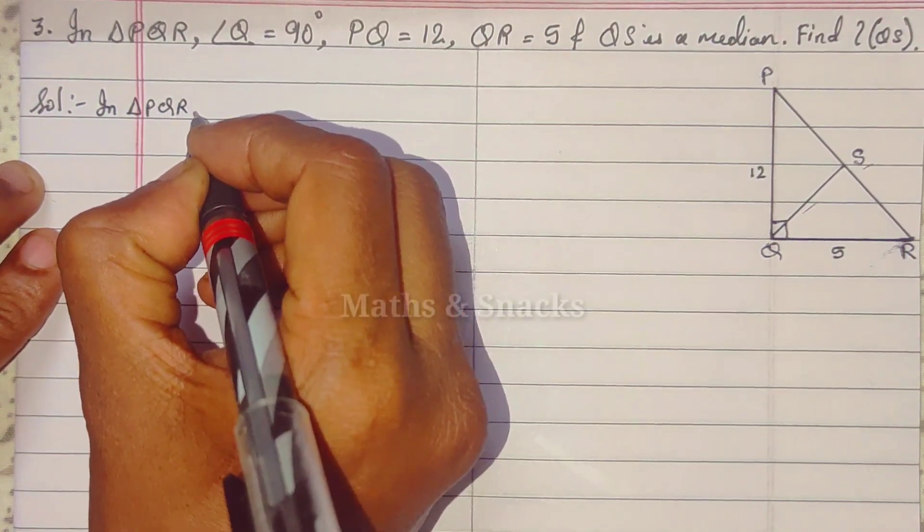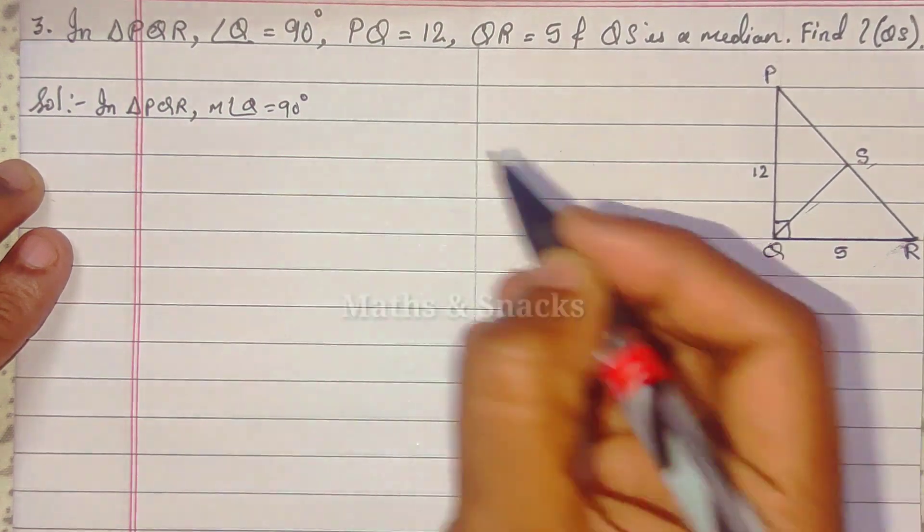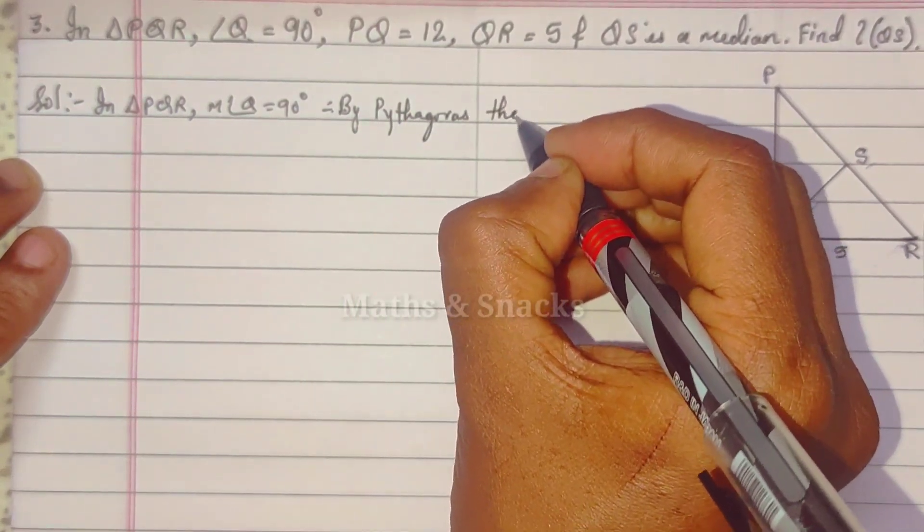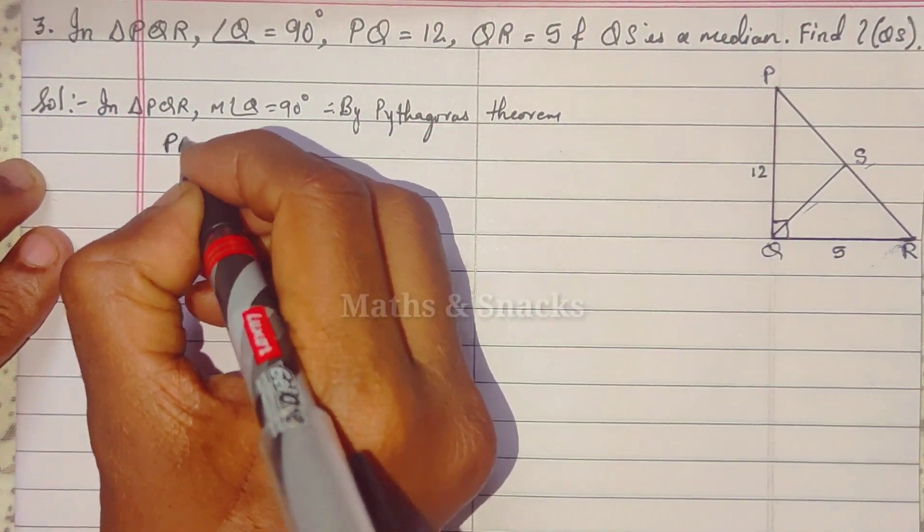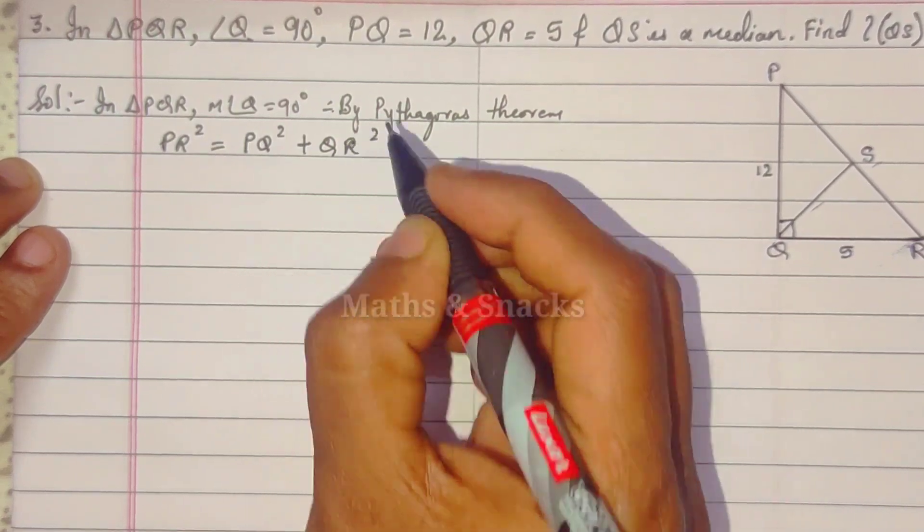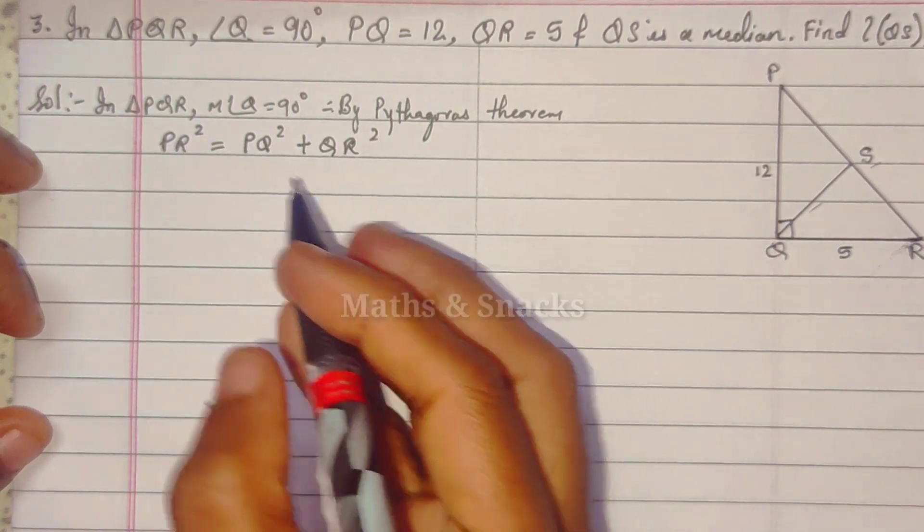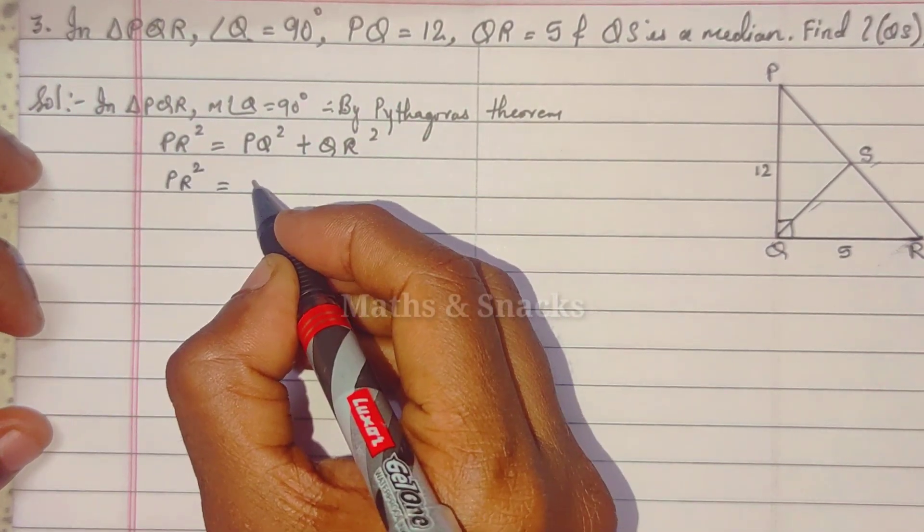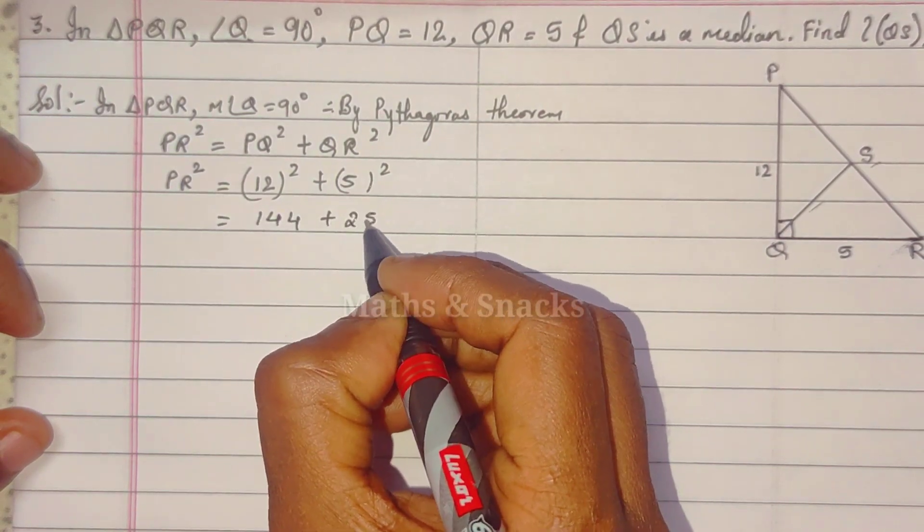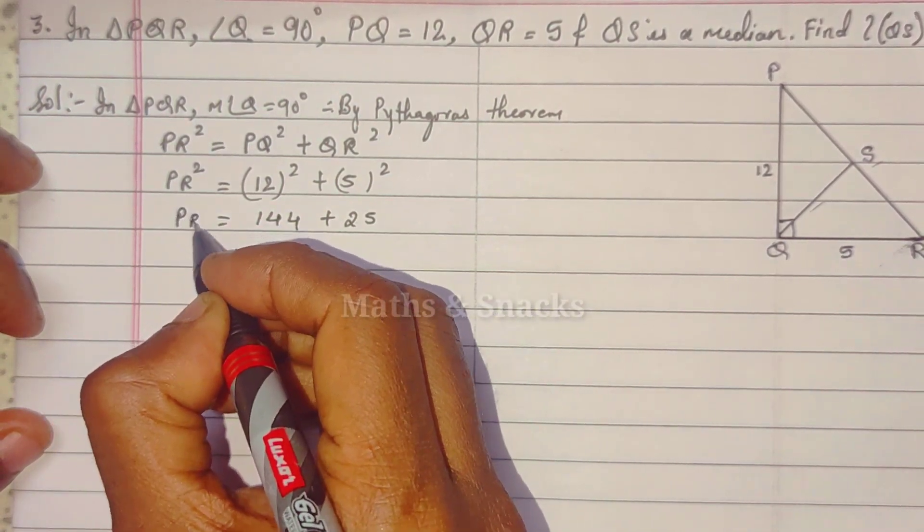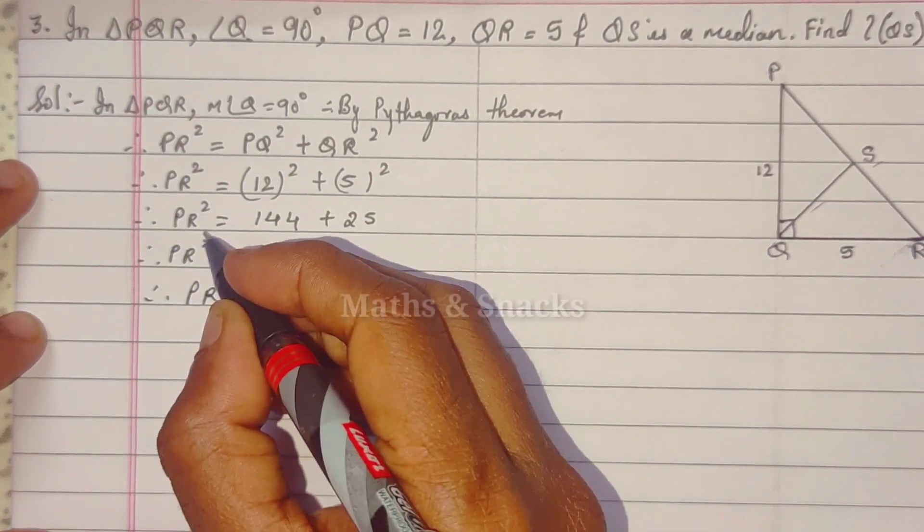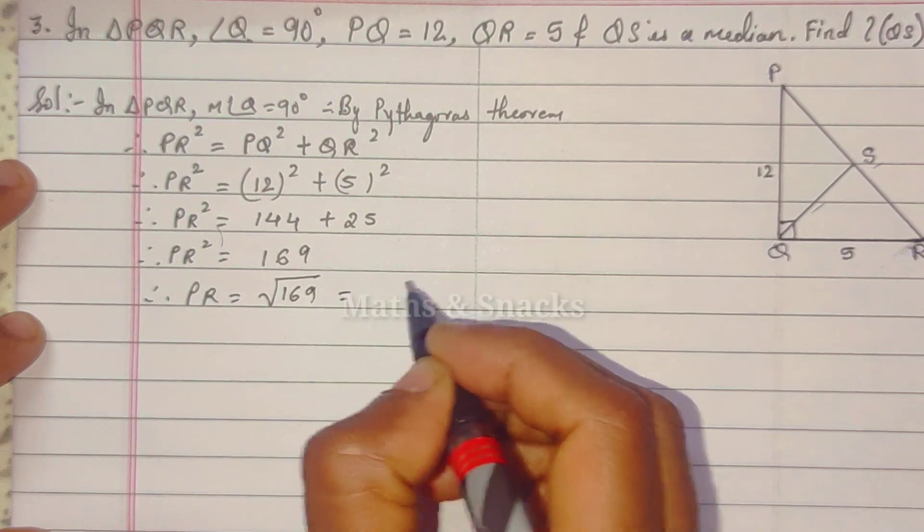So in triangle PQR, measure angle Q is 90 degrees. So therefore, by Pythagoras theorem. Therefore hypotenuse formula, what happens? PR square equals PQ square plus QR square. Hypotenuse ka formula, what happens? Hypotenuse square equals side 1 square plus side 2 square. So PR, the hypotenuse side, we do not know. But this, 12 square plus 5 square. So 12 times 12 is 144, 5 times 5 is 25. That equals 169. PR square. Therefore, PR equals square root, that equals 13.